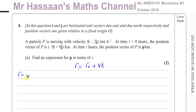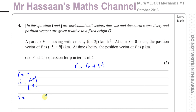So here our r is equal to p — that's the position vector. Our r₀ is the position vector at time equals 0, which is minus 5i plus 9j, written as the column vector minus 5 and 9. That's where it is in relation to the origin when time was 0. And the velocity vector is i minus 2j, which is 1 and minus 2.